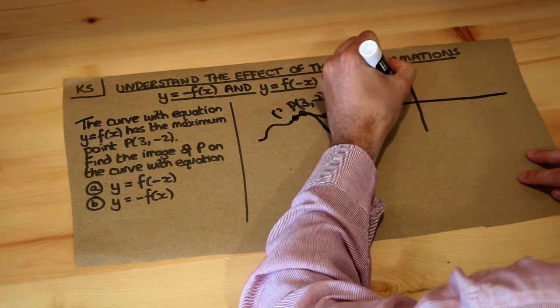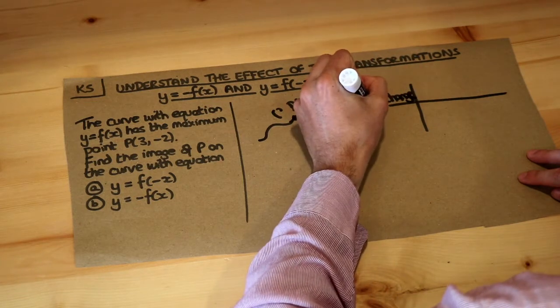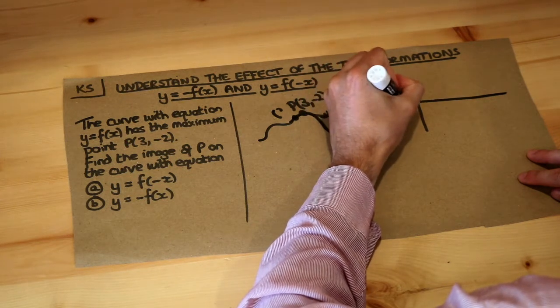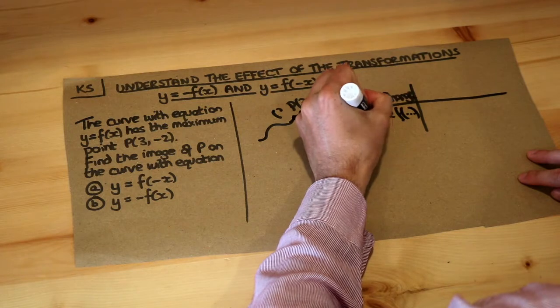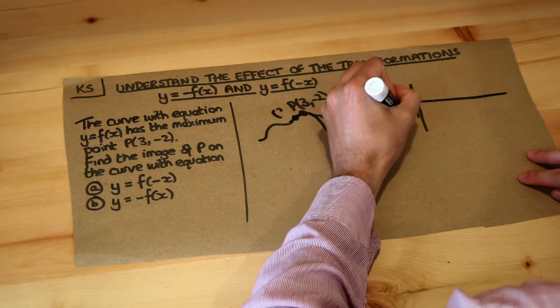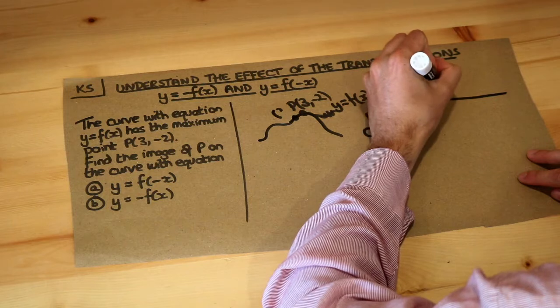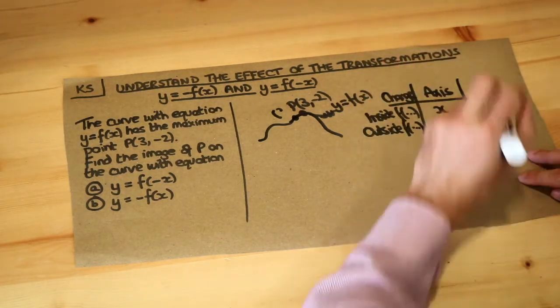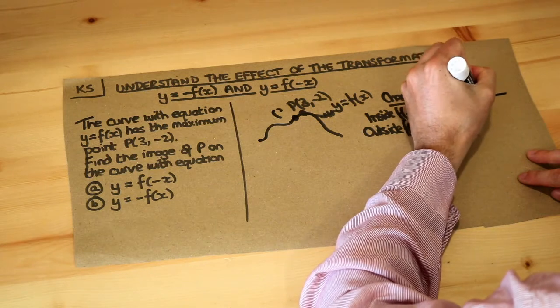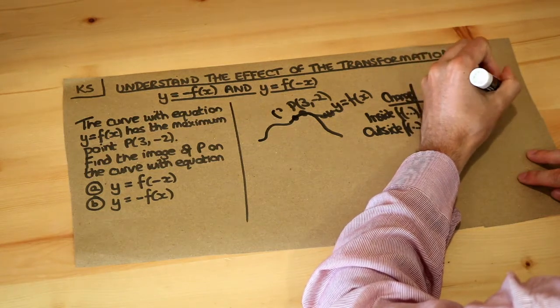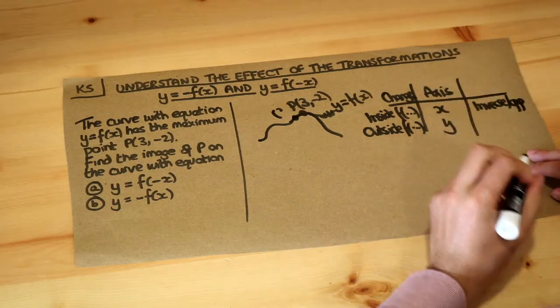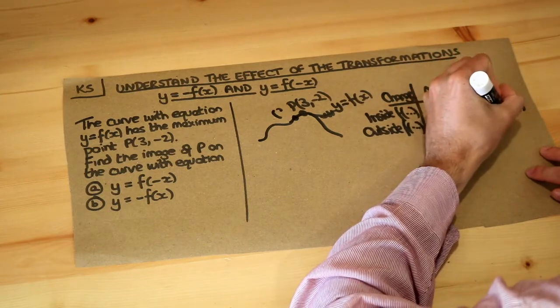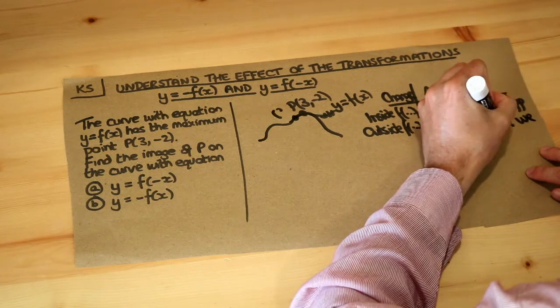Now I previously had a summary table on how different modifications to the function affect the graph. So we look to see if the change to the function was inside the function or outside the function, and depending on the answer to that question then the axis affected would either be x or y. If the change was inside the function we do the inverse or the opposite of whatever the change was, and if it was outside the function we don't do the opposite, so we just do what we expect. I'll explain what I mean by that in a second.